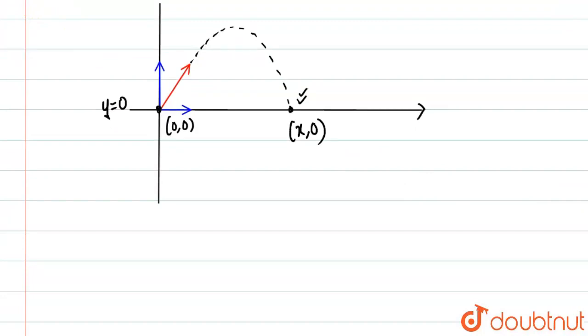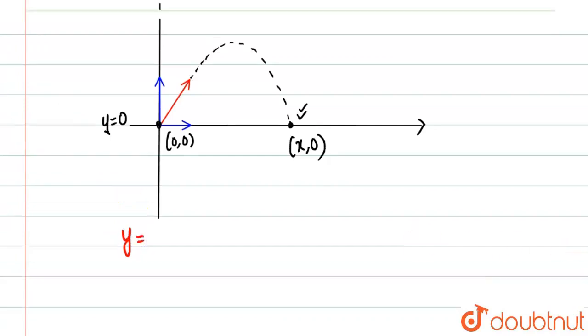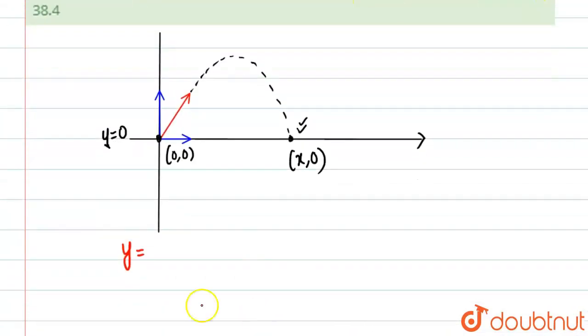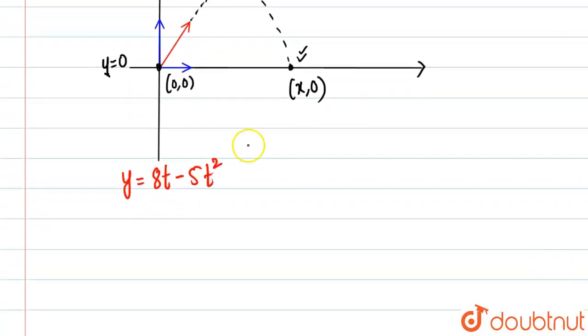So basically, I'm showing you what we are doing just to make a clear picture. So y is given 8t - 5t². So what I'm trying to do over here is that I'm putting it as 0. So I'll find where y comes 0. So y will come 0 at two points. I showed you one is this, one is this.